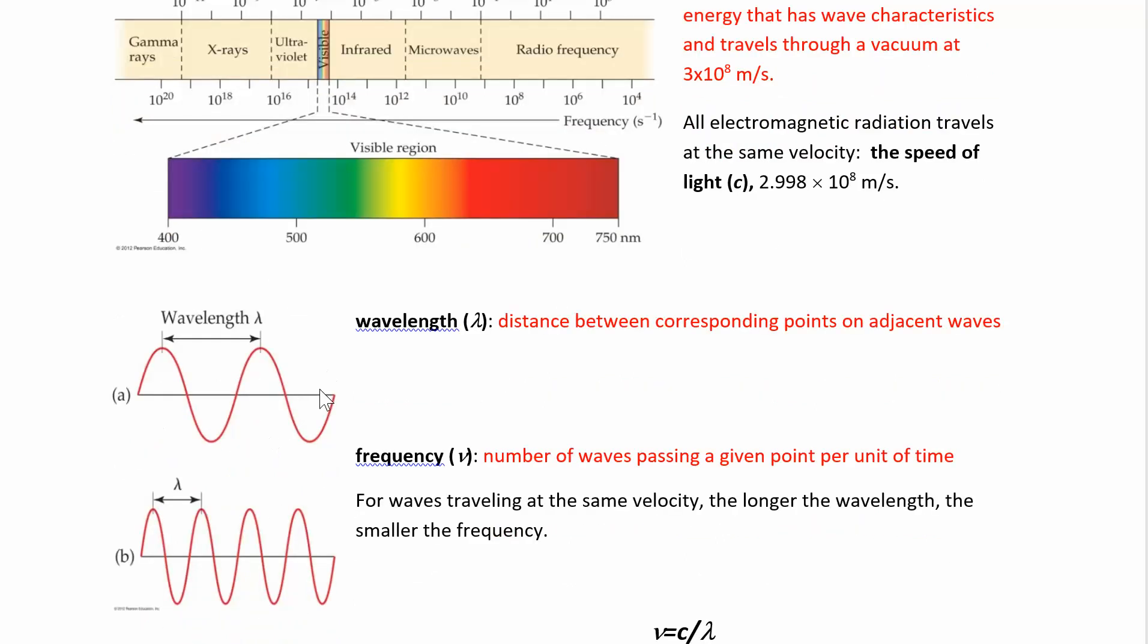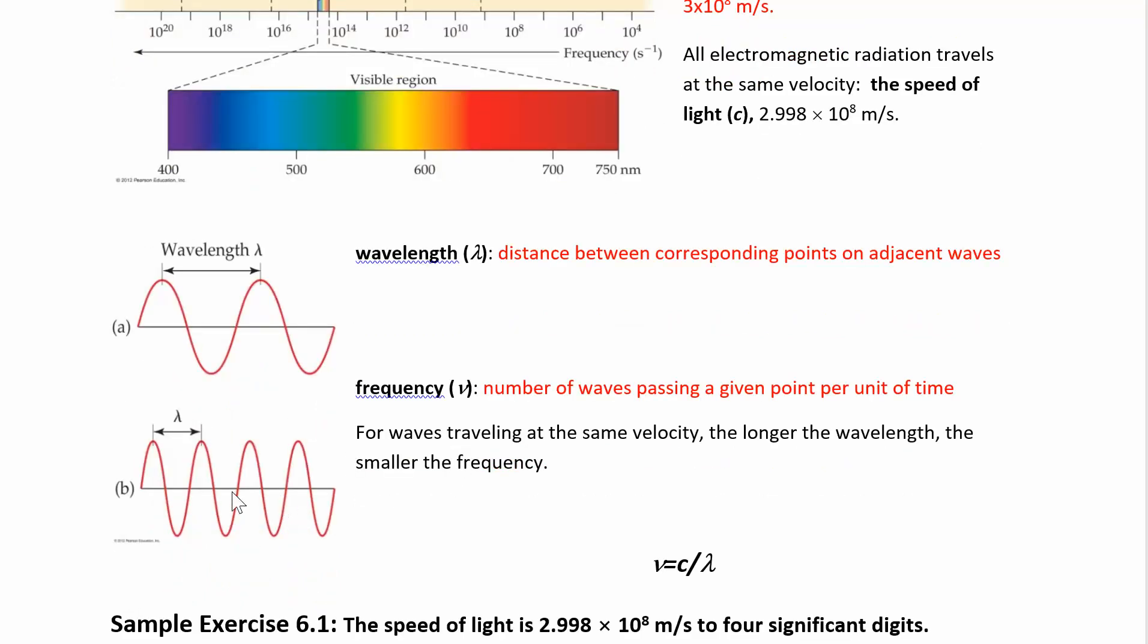Another way to characterize the wave, you look at the frequency. Frequency is how many times, if you think about a wave, like you're at the beach and the wave is hitting the dock, how many times it hits the dock in a certain amount of time. That's the frequency.